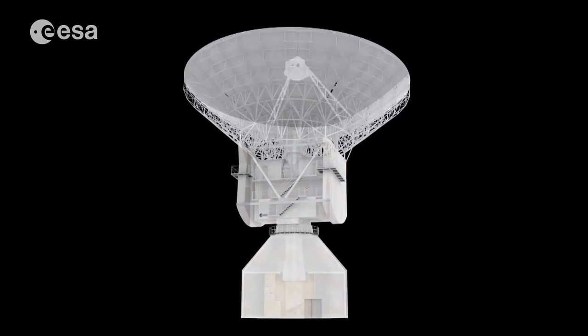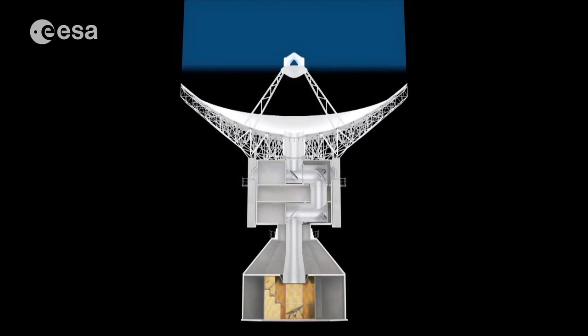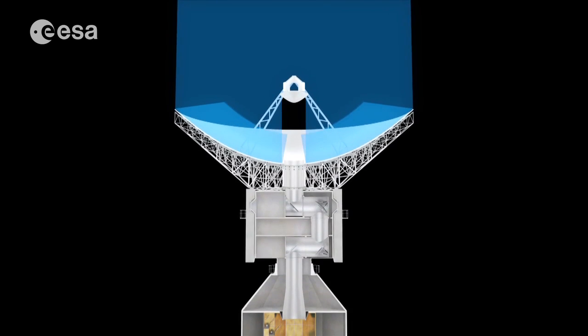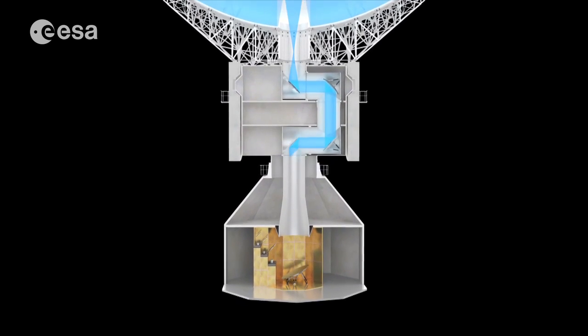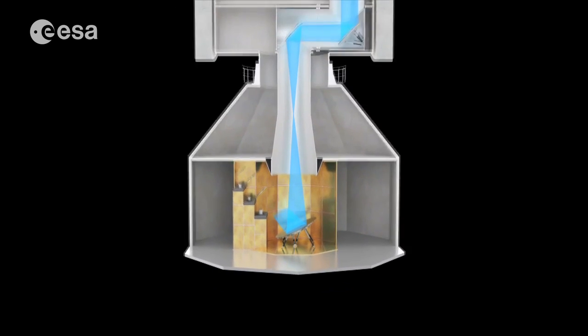All the received energy is captured by the large dish. It is focused on the so-called sub-reflector and the signal is then guided to the base of the antenna, where special dichroic mirrors separate the incoming frequency bands.